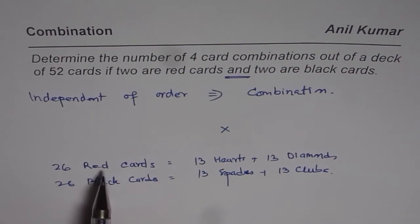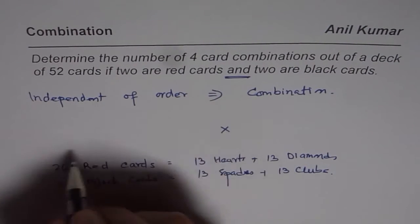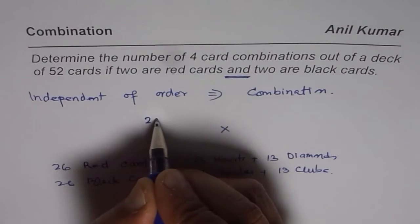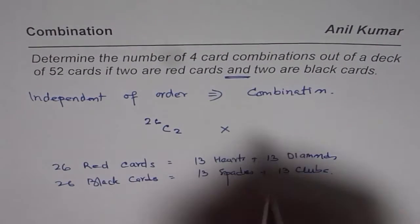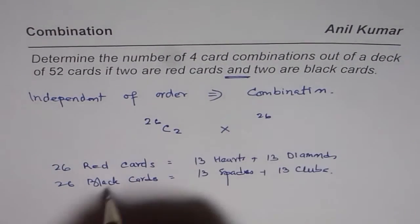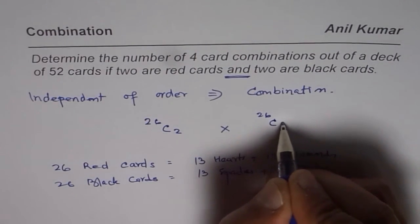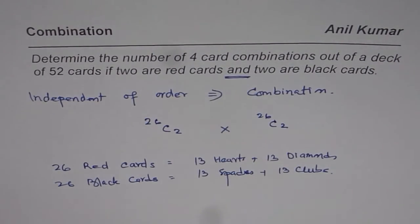So, out of 26 red cards, we have to draw 2. It becomes 26C2. And then, from 26 black cards, we have to draw 2 blacks. So, 26C2. That becomes our answer.